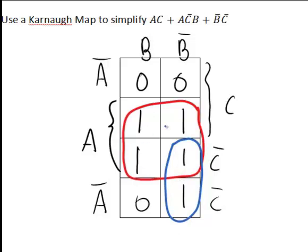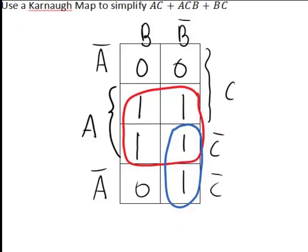And the final step is we now need to write down the expression based on those squares of ones that we have circled. And first looking at the four square of ones that were circled in red here, you'll see that all of those are in A. But some of those ones in that four square are in C, some in C bar, so it cannot be defined in terms of C or C bar. And the same with B. Part of it is in B, part in B bar. So that four square will just be written as A.